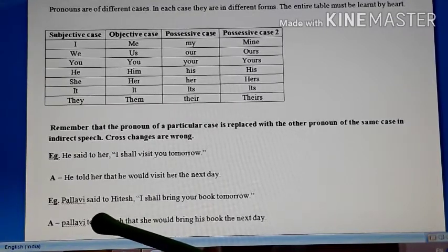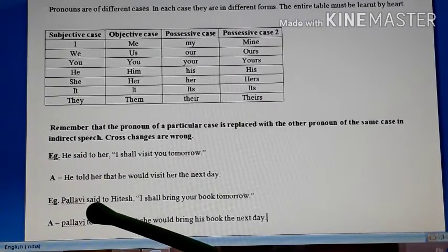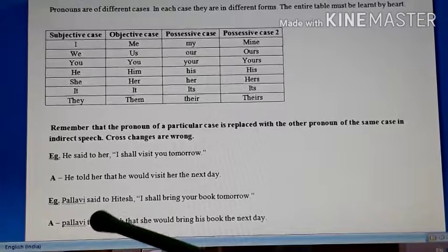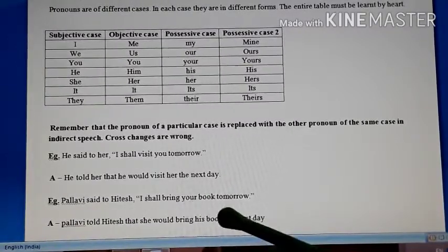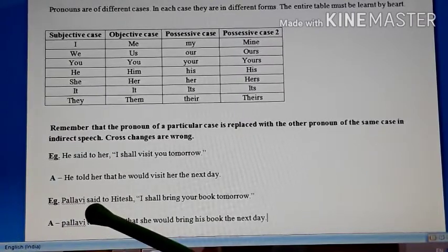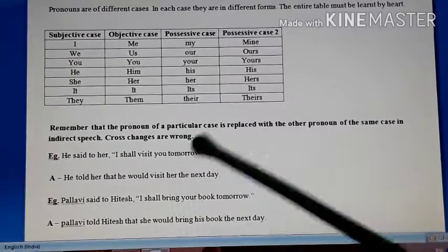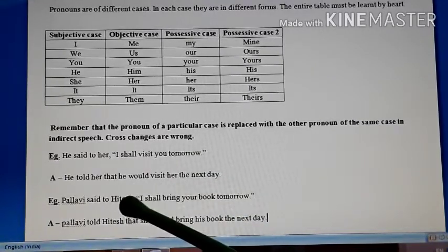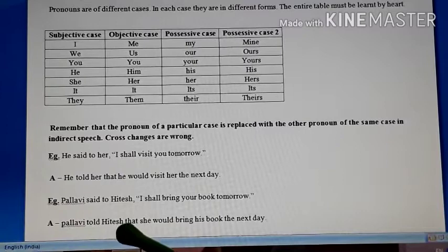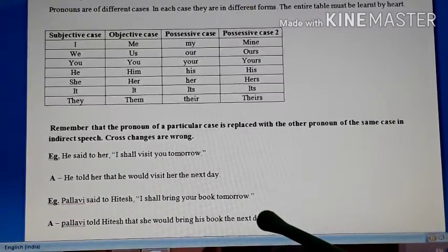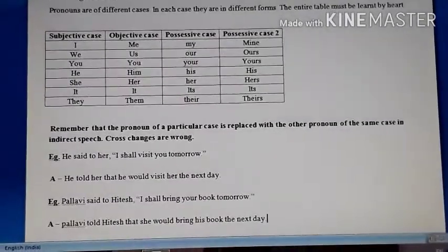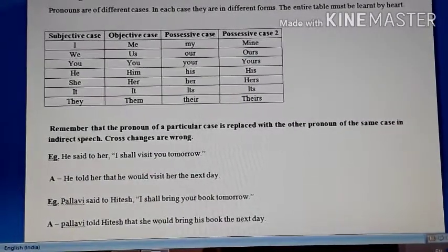Here is another example: 'Pallavi said to Hitesh, I shall bring your book tomorrow.' Speaker is Pallavi, so I refers to Pallavi — a female — so I is replaced with she. Your refers to Hitesh's, and Hitesh is he, so your is replaced with his. The indirect becomes: 'Pallavi told Hitesh that she would bring his book the next day.' So pronouns are replaced with other pronouns of the same category only.